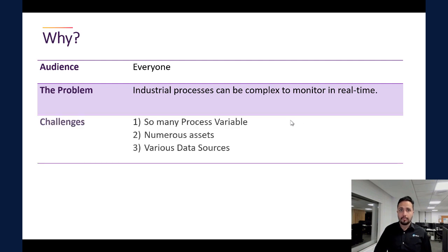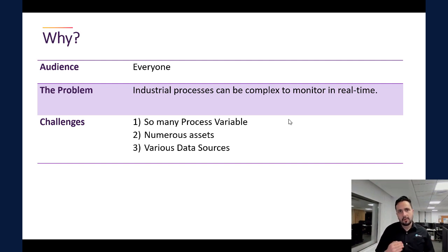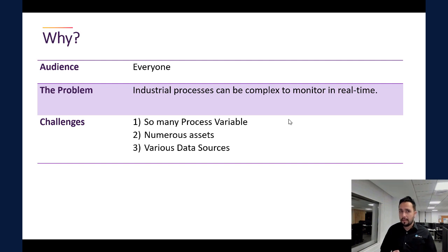This complexity comes from the large number of process variables — tens and hundreds — and the data for these assets are scattered across multiple data sources. You might have data coming directly from sensors, other data from the control system whether it's a DCS or a PLC, and other data coming from the maintenance system, batch management system, lab information management system, and so on.